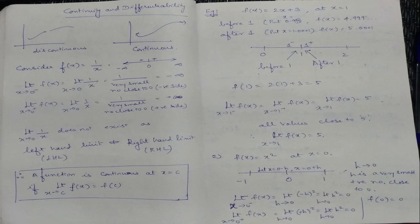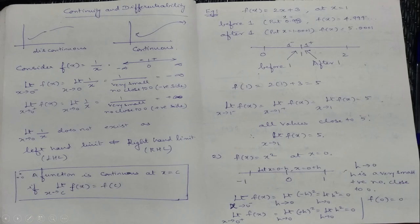We see that the left-hand limit equals the right-hand limit, which is also equal to the value of the function at 0 — all equal 0. So we can say the function f(x) = x² is continuous at x = 0. That is the final conclusion from our discussion. These are very elementary sums.